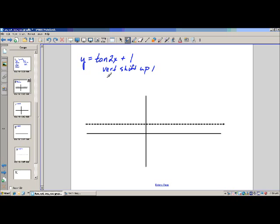Now, tangent of 0 is what? At 0, the slope is 0, so tangent of 0 is 0. 2 times 0 is 0, plus 1 is 1.